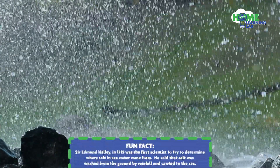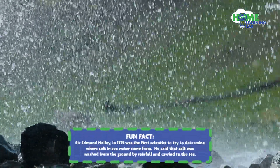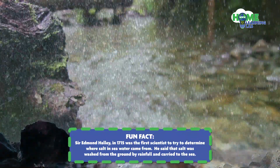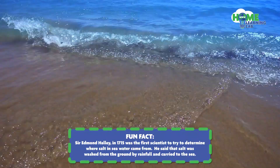When rain falls, it dissolves carbon dioxide from the air, making it become slightly acidic. The rain then erodes rocks, and this process leads to ions forming that move downstream into rivers that lead to the ocean.